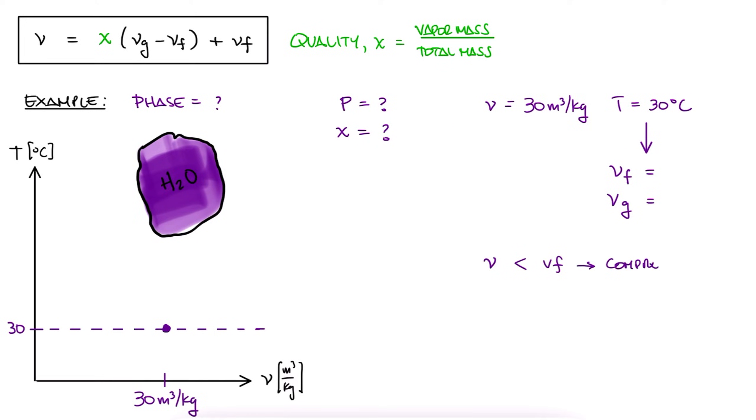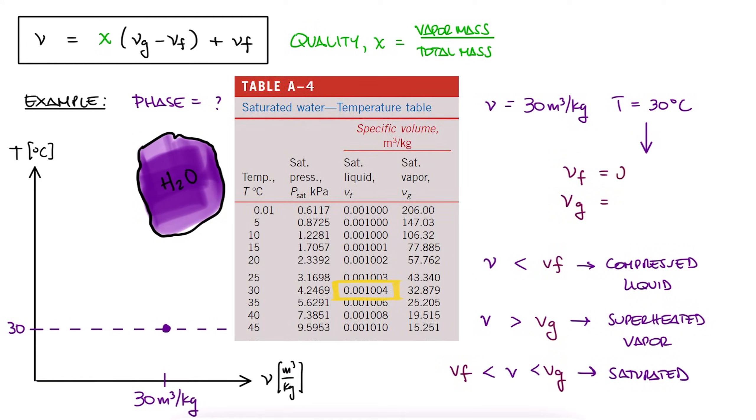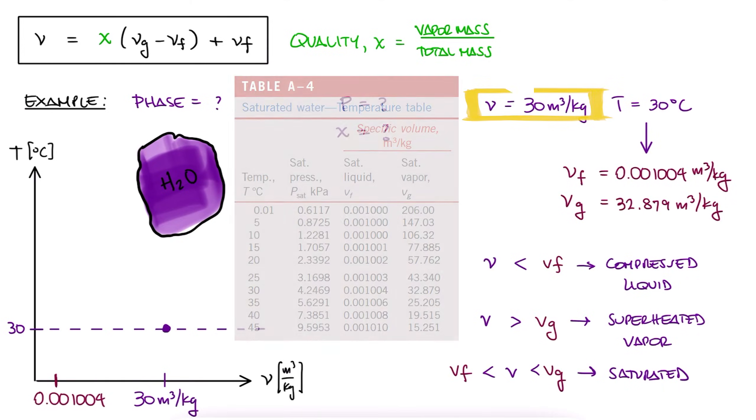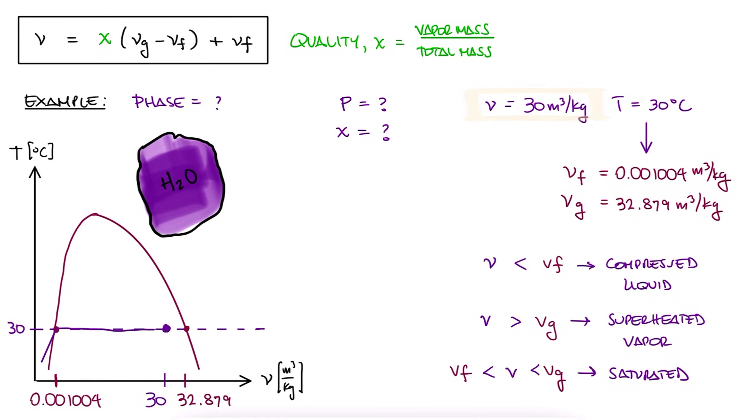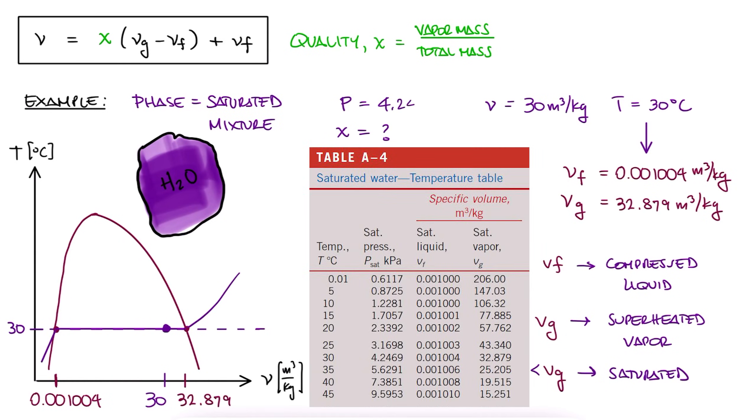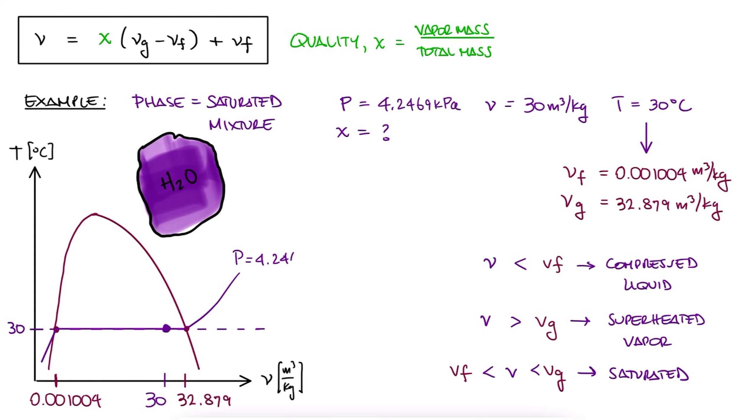If V is lower than Vf, we have compressed water. If V is greater than Vg, we have superheated water. And if V is between Vf and Vg, we have a saturated mixture. Since Vf is 0.001004 and Vg is 32.879, our current V of 30 cubic meters per kilogram means that we have saturated water. Because of this, we know that the pressure has to be the saturation pressure, otherwise we wouldn't have saturated water.